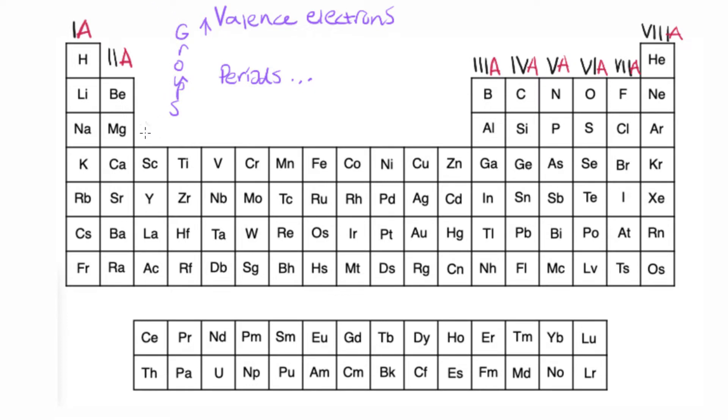And this section right here is known as the transition metals. And they're a little weird in regards to valence electrons, so we're not going to worry about that for now and you'll most likely never be asked about that either.